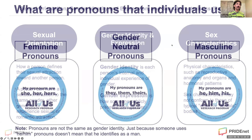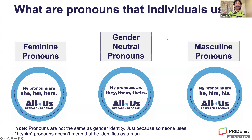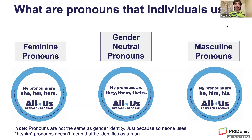Now that we've talked about these three core components, we'll dive into each of those areas as we go into the training, but wanted to just level set and provide some foundation. We're going to talk more about pronouns in general. We kind of see there are three different categories when it comes to thinking about pronouns: feminine pronouns — commonly she, her, and hers; gender neutral pronouns — commonly they, them, and theirs; and masculine pronouns — which can commonly be considered as he, him, and his. But it's important to note that pronouns are not the same as gender identity. Just because someone uses he/him pronouns doesn't mean that he identifies as a man.